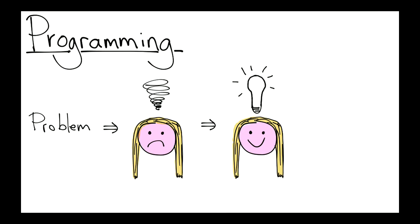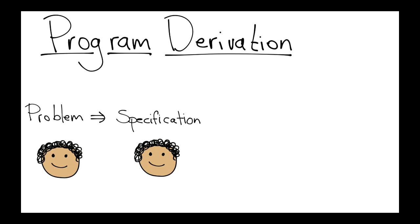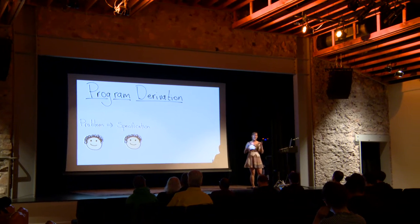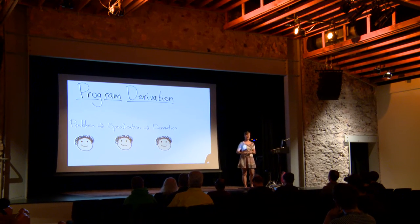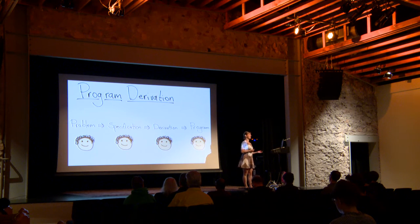My talk is about program derivation. So this is how normal programming goes: you have a problem, you get really frustrated, you think so deep that smoke comes out of your head, and then you have an idea and you're happy — that's when programming is nice. Program derivation, on the other hand, is where you start with a problem but before you start programming you write a specification — and you're still happy because writing a specification is pretty nice. Then you take your specification and you derive a program from it.